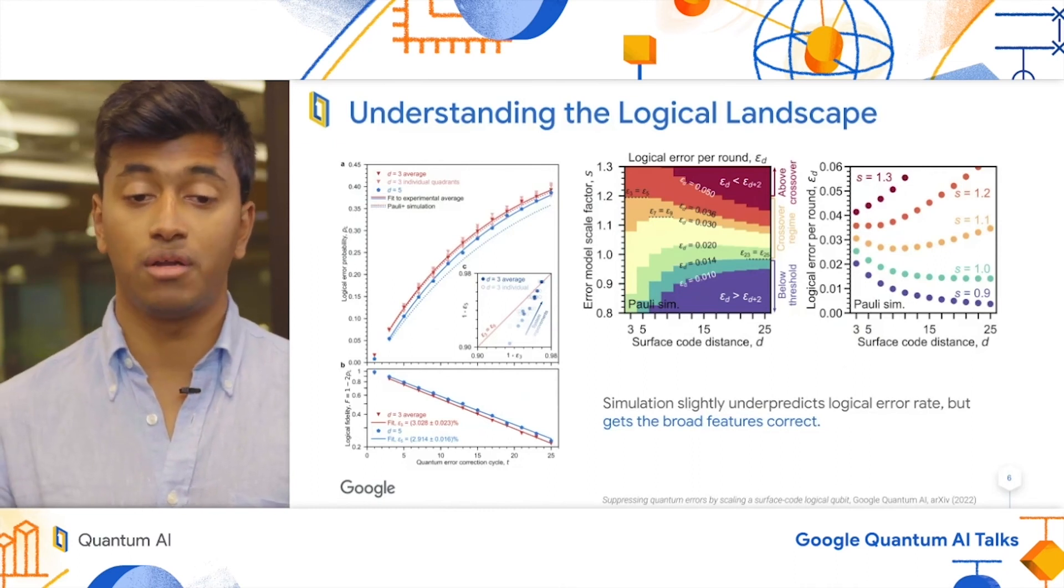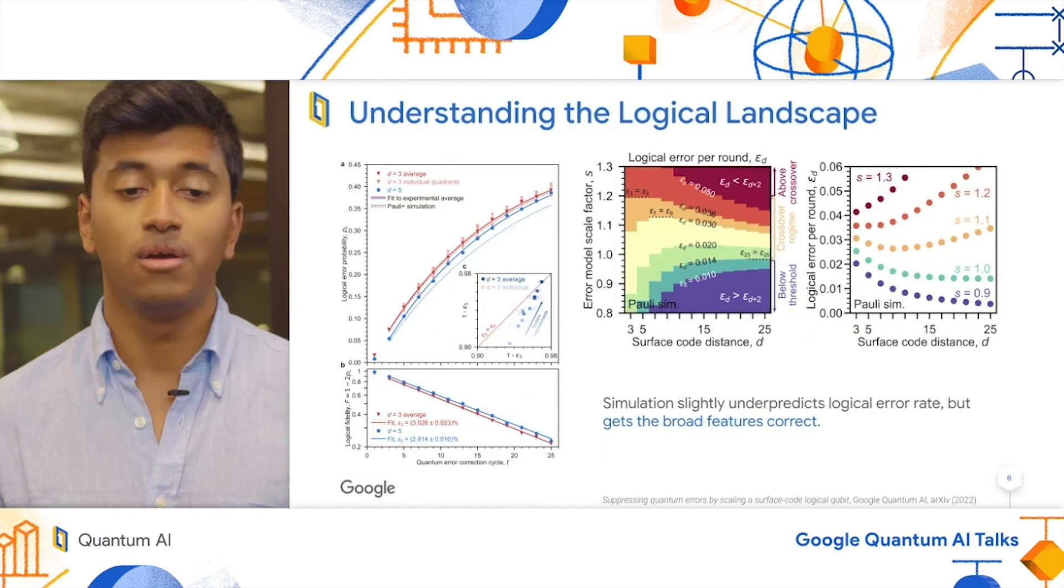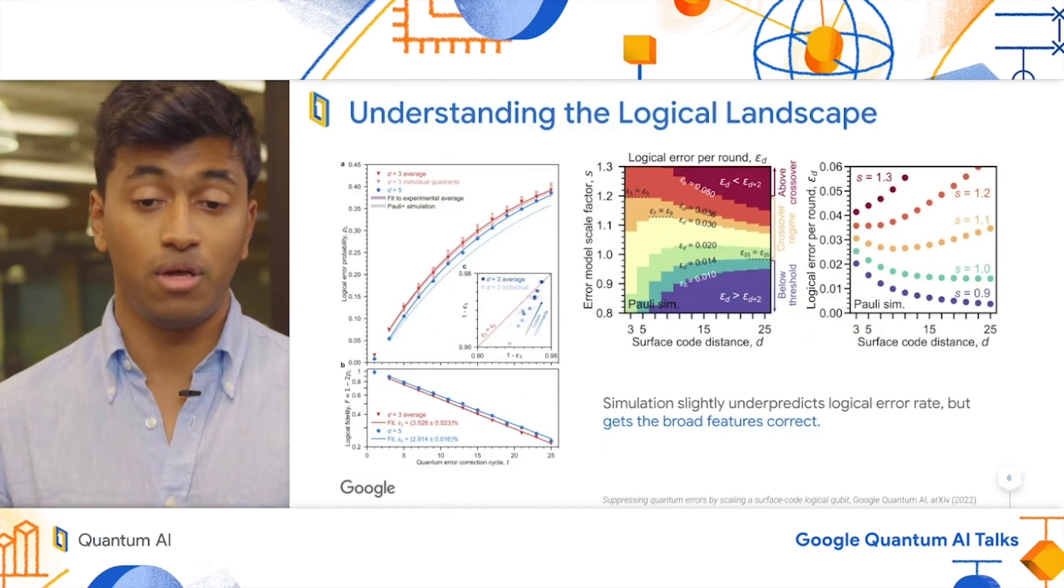You can see that in this model, our current status, where E3 and E5 are roughly equivalent, happens at S of 1.17, which, given the simulation was a Pauli-simulator,